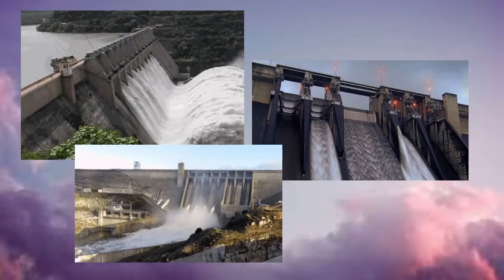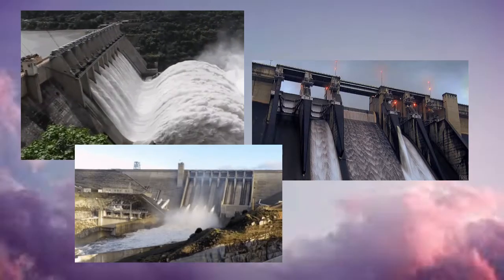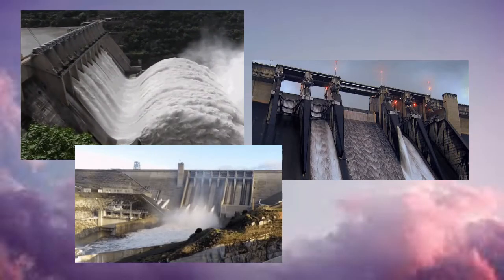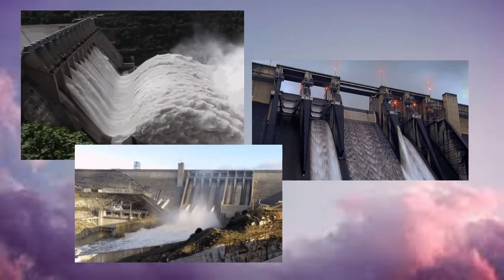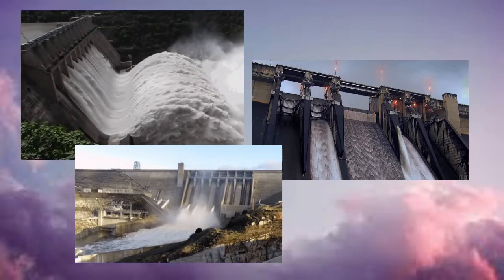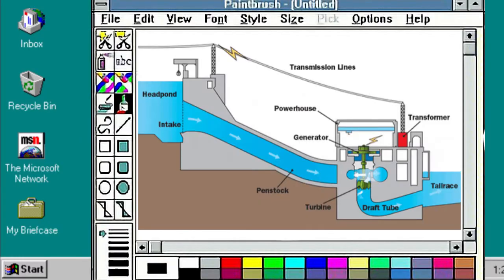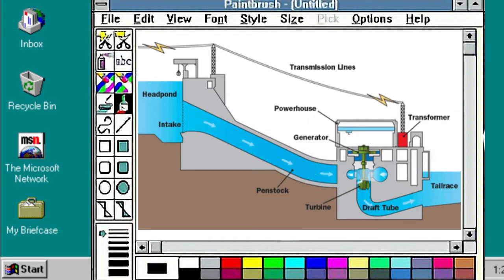Hydroelectric power stations, on the other hand, use the kinetic energy of moving water. The water usually comes from behind a dam built across a river valley. When the water is released, it runs the turbines which make the generators spin.